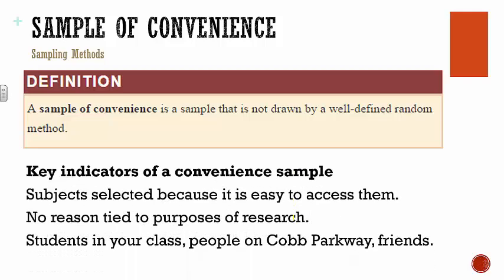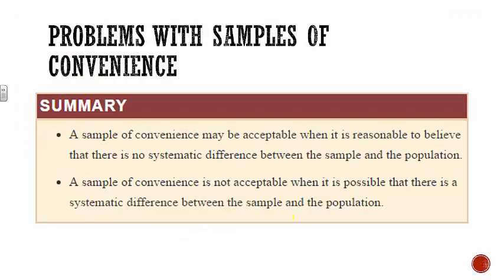Convenience sampling is typically frowned upon because it wasn't purposeful — it was just easy. We don't want to do stuff that's easy; we want to do stuff that's accurate and is going to yield us the best sample to give us information on the population. Again, the problem with convenience samples is that they weren't done to help the study or get better results — they were done because it was easy, and that's not the best way because it leads to bias.